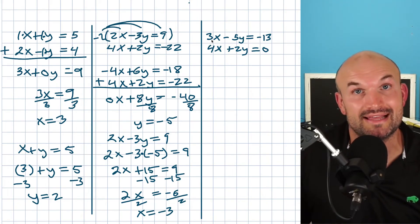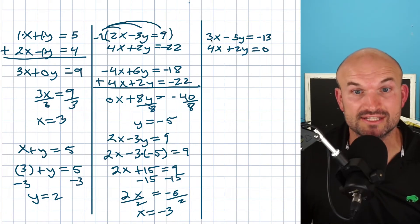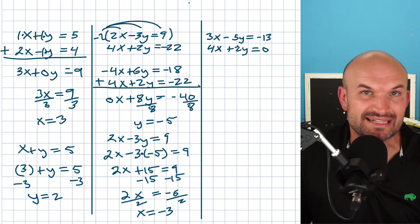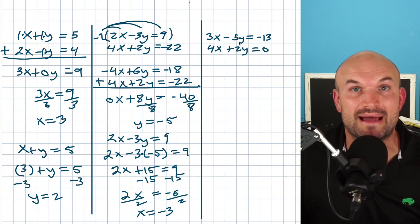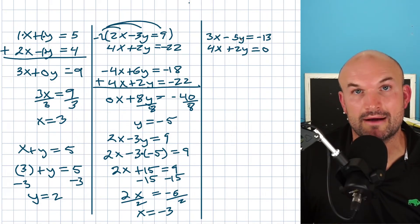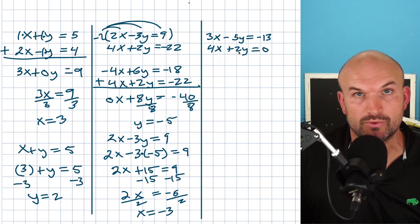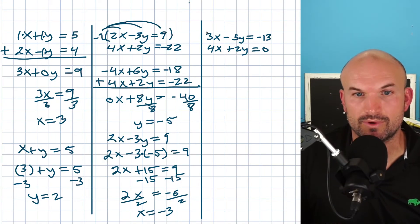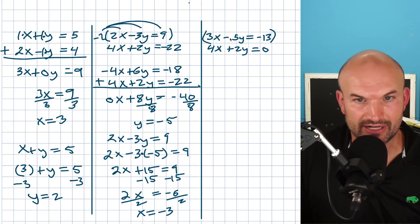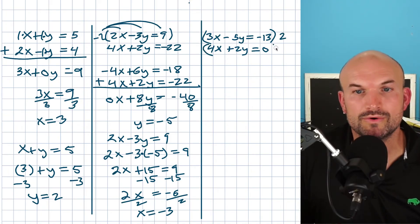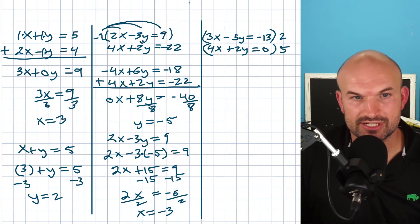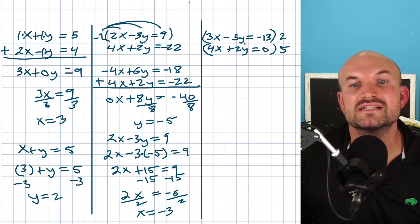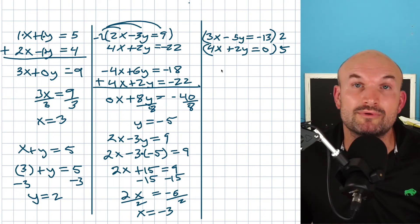I also like to find the variable with the smaller least common multiple. The LCM of 3 and 4 is 12, and the LCM of 5 and 2 is 10 — so I'll eliminate Y since it's a bit smaller. I need to multiply the top equation by 2 to get negative 5Y to become negative 10Y, and the bottom equation by 5 to get 2Y to become 10Y. Make sure you multiply everything: 2 times 3X, 2 times negative 5Y, 2 times negative 13; and 5 times 4X, 5 times 2Y, 5 times 0. Then I'll rewrite the new system.